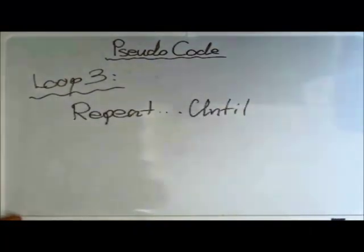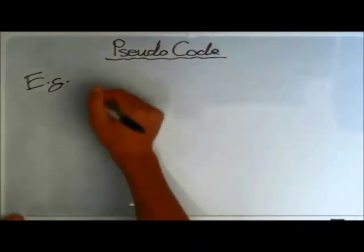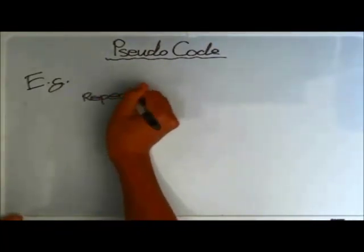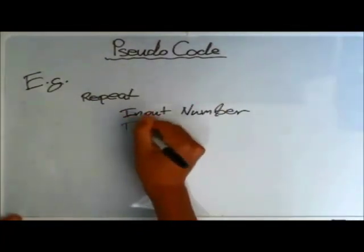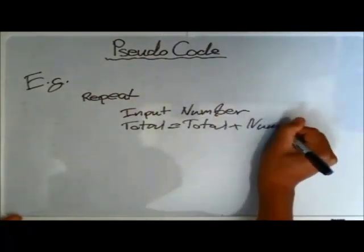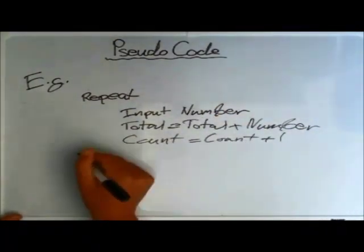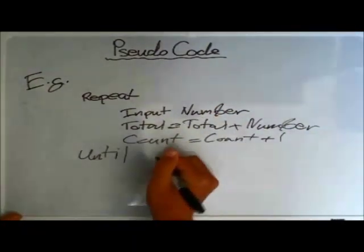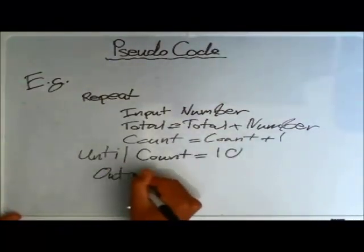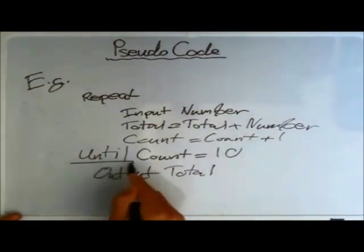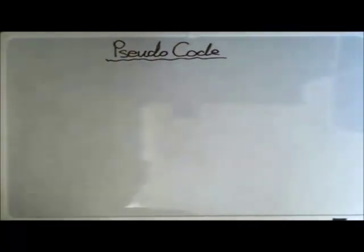Now let's look at loop number three: REPEAT UNTIL. In the example: REPEAT — the user inputs a number, total equals total plus one, count equals count plus one to control how many times we go through the loop — UNTIL count equals ten. Then we output the total. There is REPEAT and UNTIL in the code.